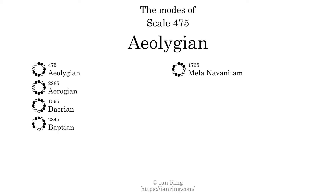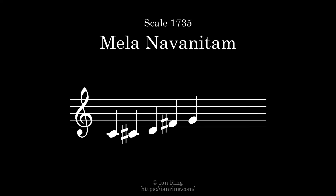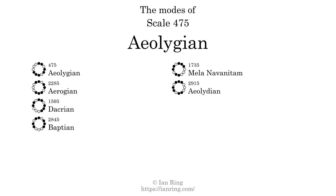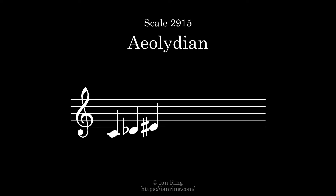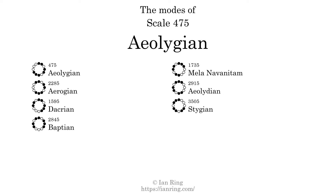The fifth mode is scale 2915, also known as eolidion. It sounds like this. The sixth mode is scale 2915, also known as eolidion. It sounds like this. The seventh mode is scale 3505, also known as eolidion. It sounds like this.